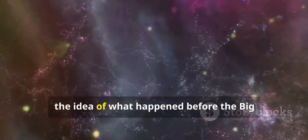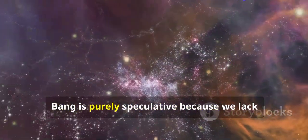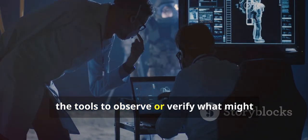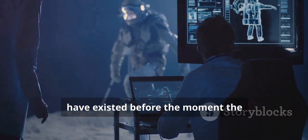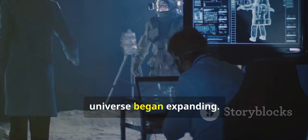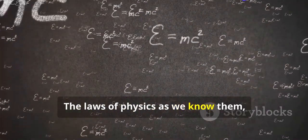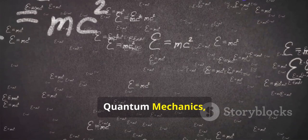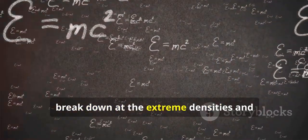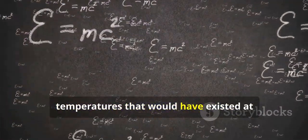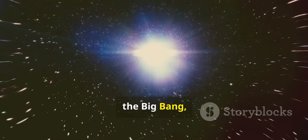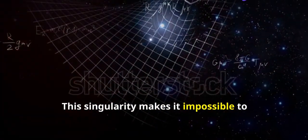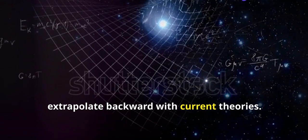At present, the idea of what happened before the Big Bang is purely speculative, because we lack the tools to observe or verify what might have existed before the moment the universe began expanding. The laws of physics as we know them, particularly general relativity and quantum mechanics, break down at the extreme densities and temperatures that would have existed at the Big Bang, leading to a so-called singularity. This singularity makes it impossible to extrapolate backward with current theories.